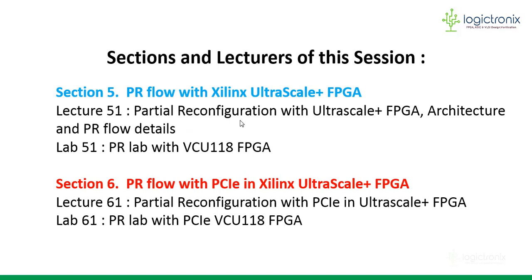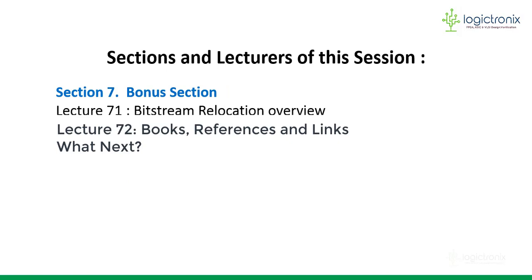Section 6 is PR flow with PCIe — Peripheral Component Interconnect Express bus — in Xilinx UltraScale+ FPGA. The PCIe IP is utilized in this section, with a lab based on the VCU118. We will show all the steps and methods of designing and generating the bitstream so it can be tested on the VCU118 Virtex UltraScale+. The bonus section consists of bitstream relocation and a few more reference links and books for partial reconfiguration.